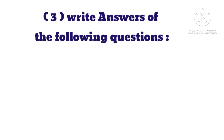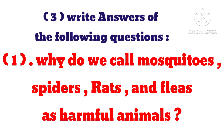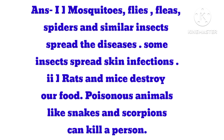Write answers to the following questions. Question 1: Why do we call mosquitoes, spiders, rats and fleas harmful animals? Answer: Mosquitoes, flies, fleas, spiders and similar insects spread diseases. Some insects spread skin infections. Rats and mice destroy our food. Poisonous animals like snakes and scorpions can kill a person.